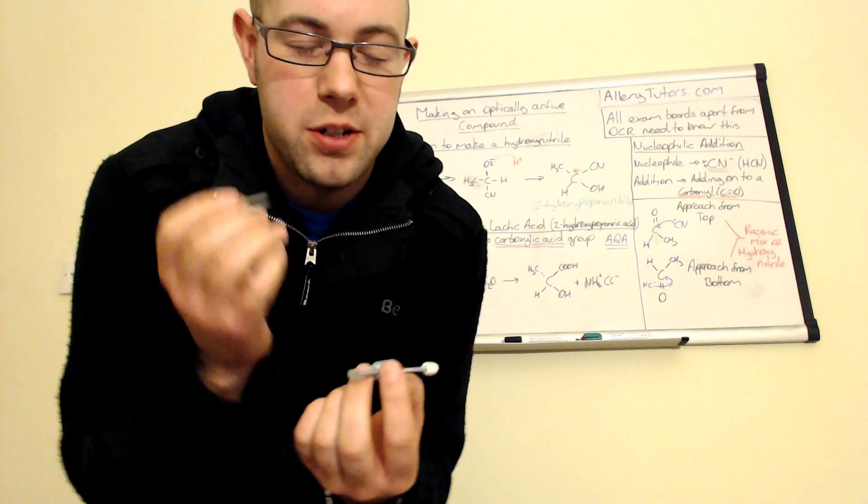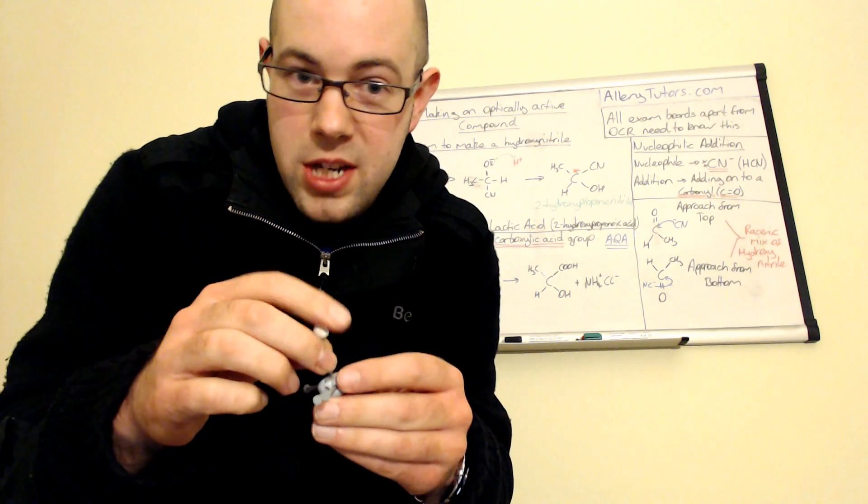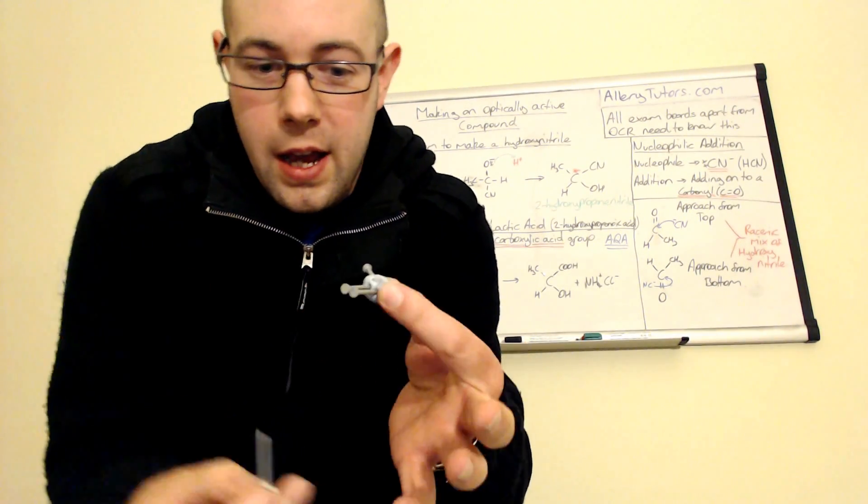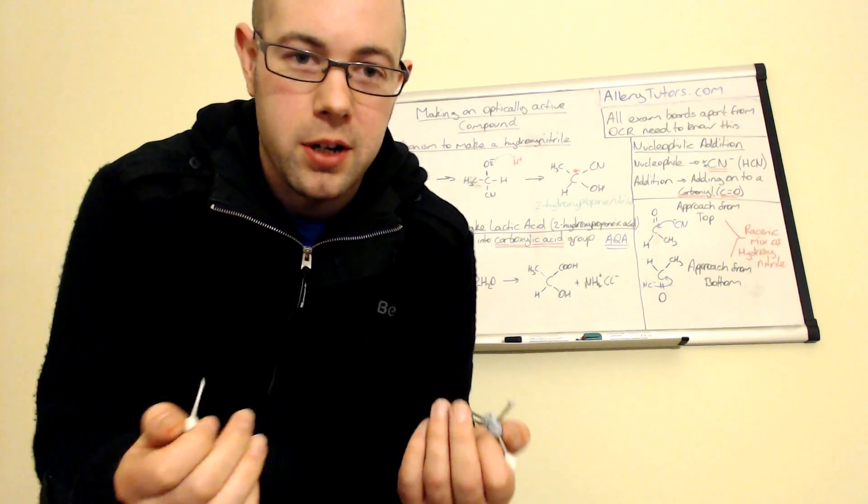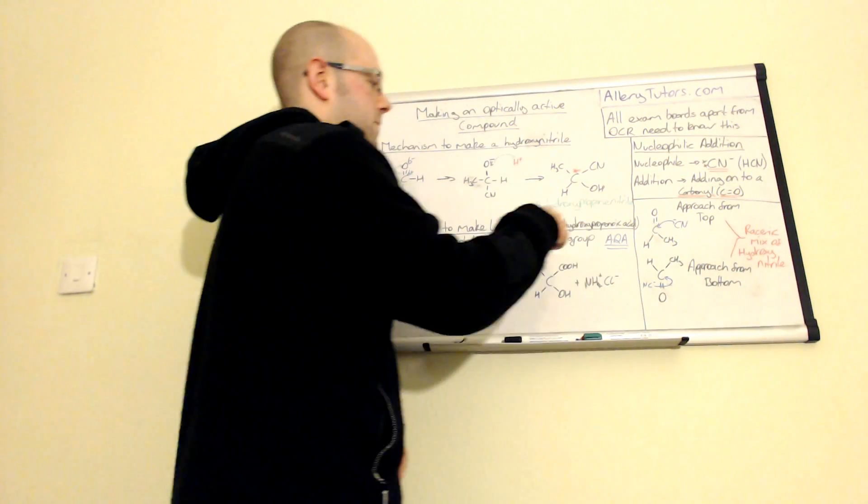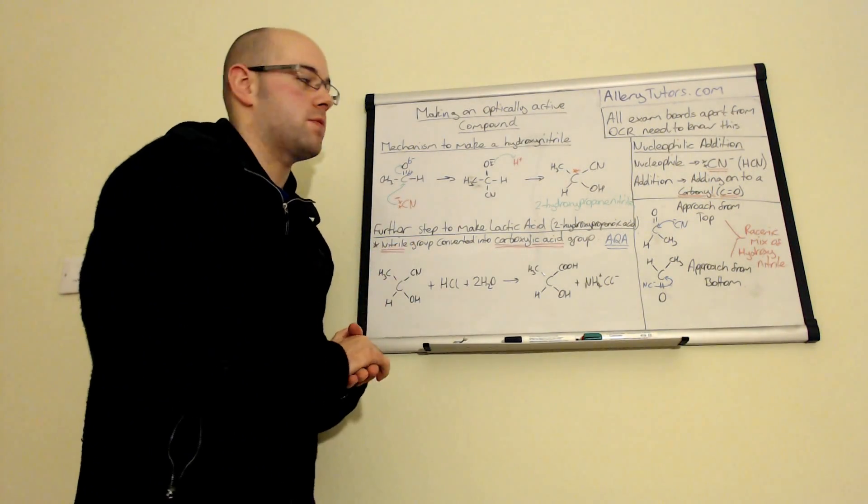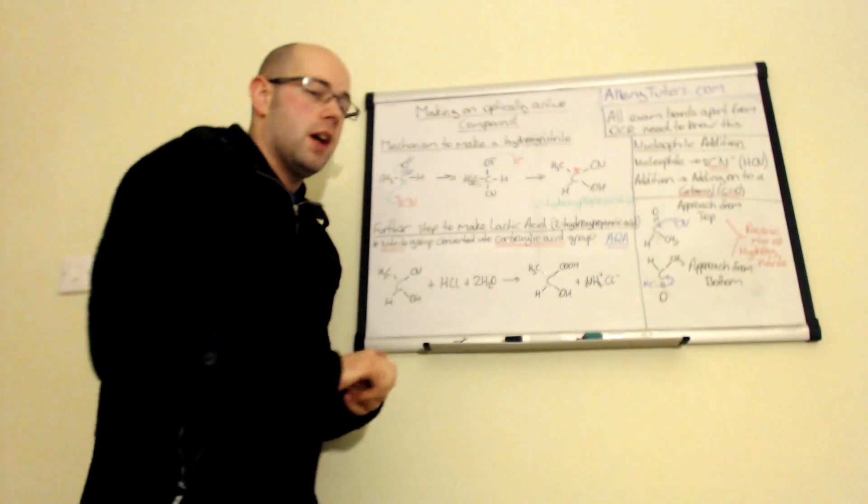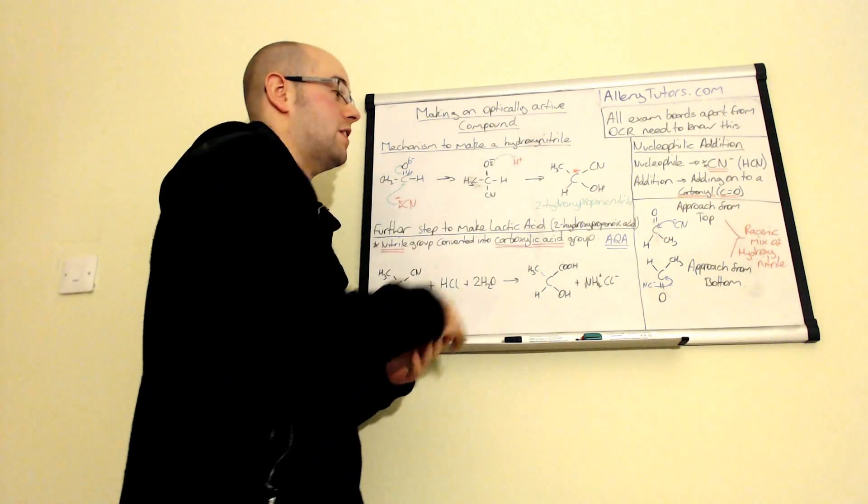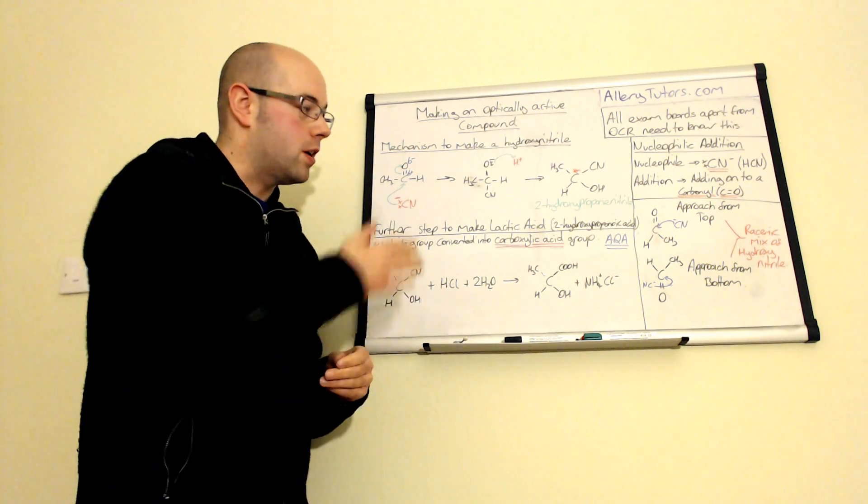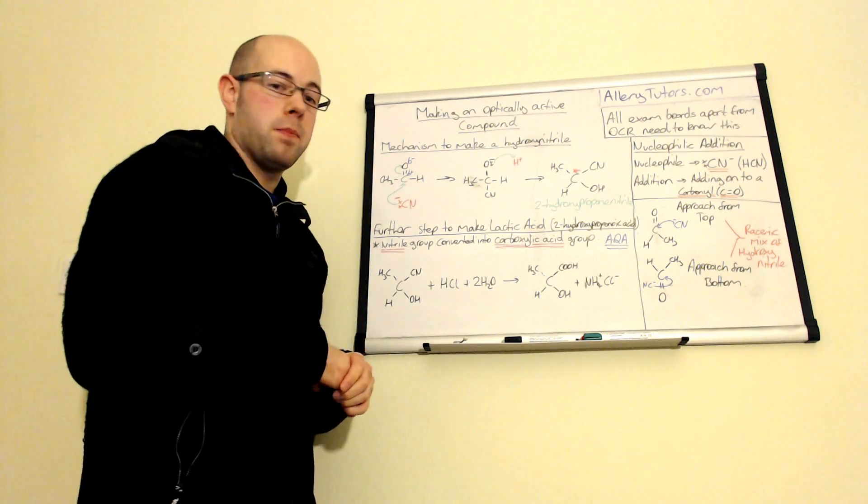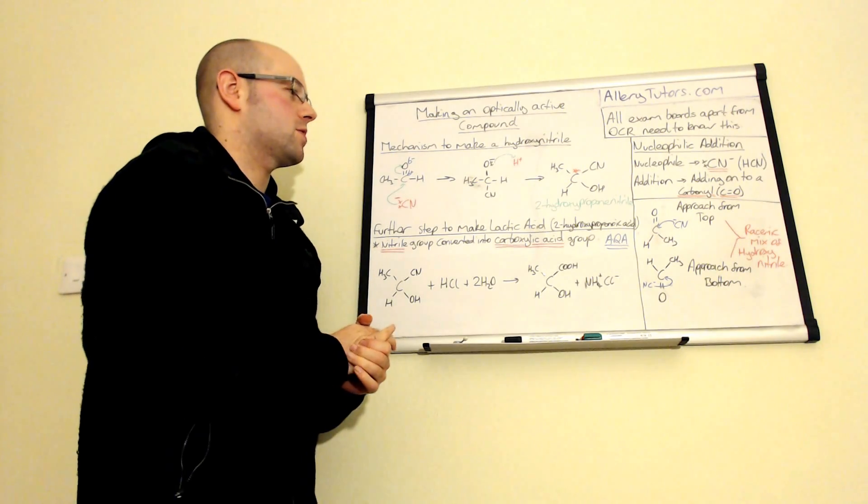And because we have no preference, actually what that means is that we can have a racemic mix. So we can have 50% of the time the cyanide can attack from the top and 50% of the time it can attack from the bottom. And because of that we can actually get a racemic mix that's been formed here. So this is optically active, so we can have a racemic mix. But actually if we put this in a polarimeter to see if it rotates plane polarised light, you might actually find that it doesn't. Because it's racemic, they actually cancel each other out.